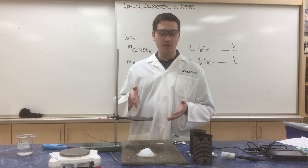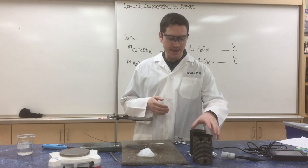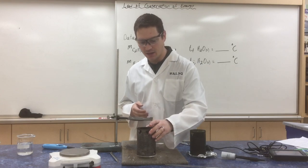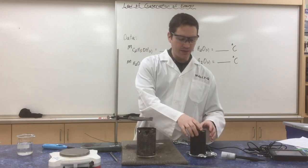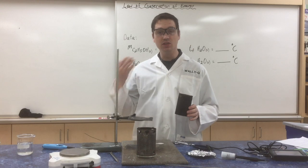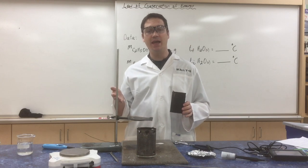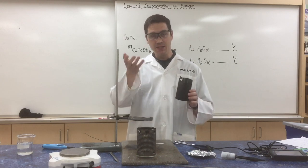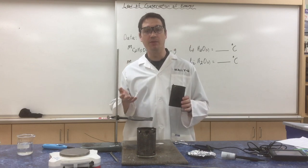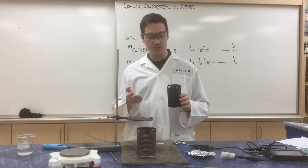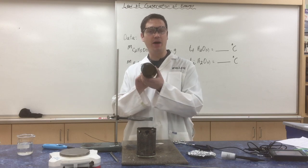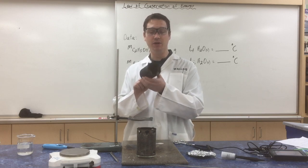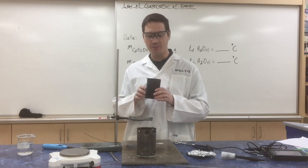So the ethanol is going to be burning inside this metal can calorimeter, and the energy that's lost by the ethanol is going to be released in the form of thermal energy, and that's going to be absorbed by the water that we will eventually put in the top can.